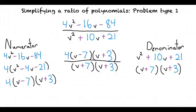What do we notice about our factors? That they both have (v + 3) in them. Exactly. Based on that, we can cancel out both (v + 3)s to get the final answer of 4(v - 7) divided by (v + 7).